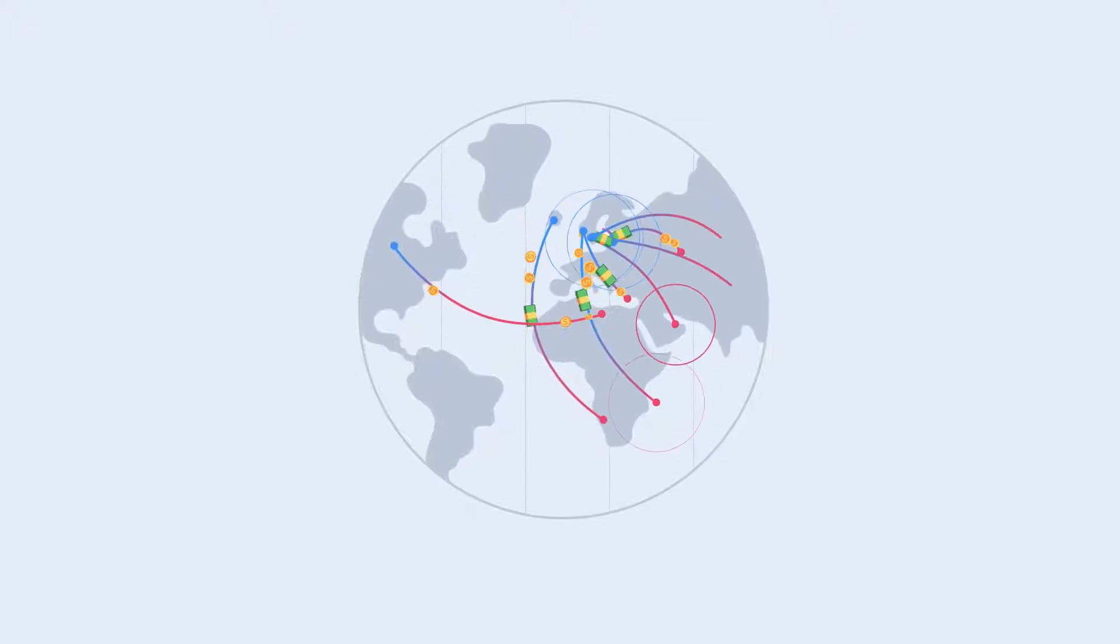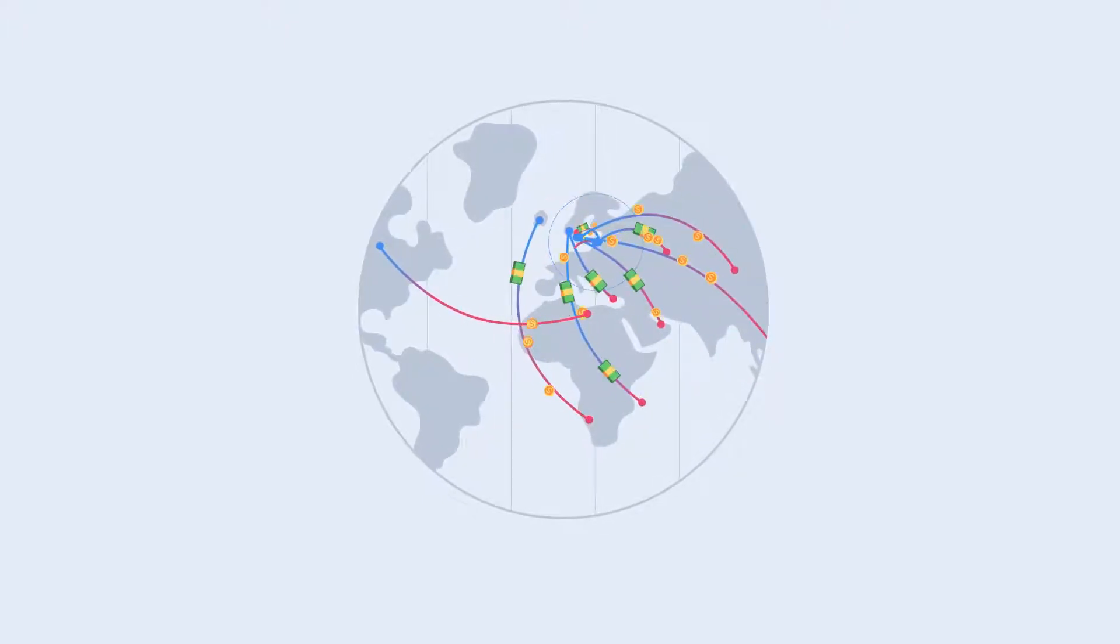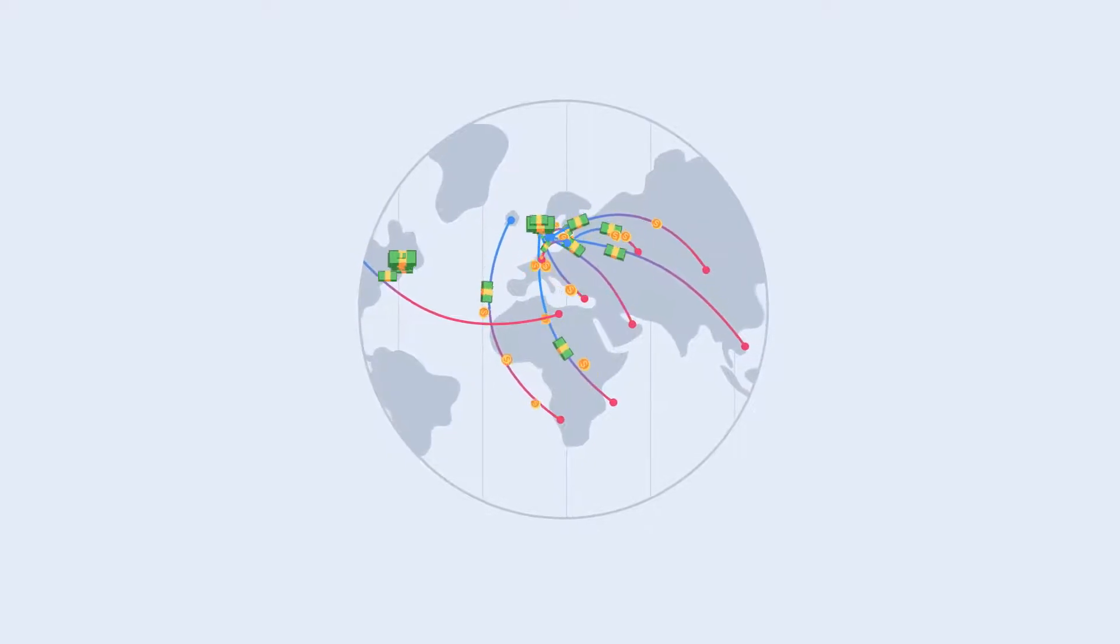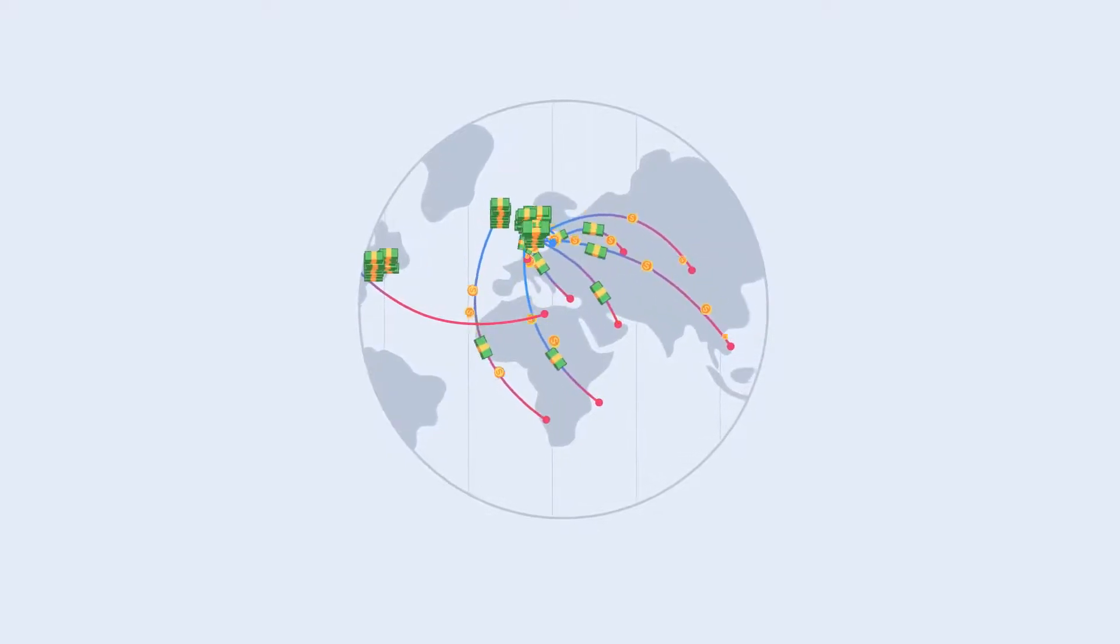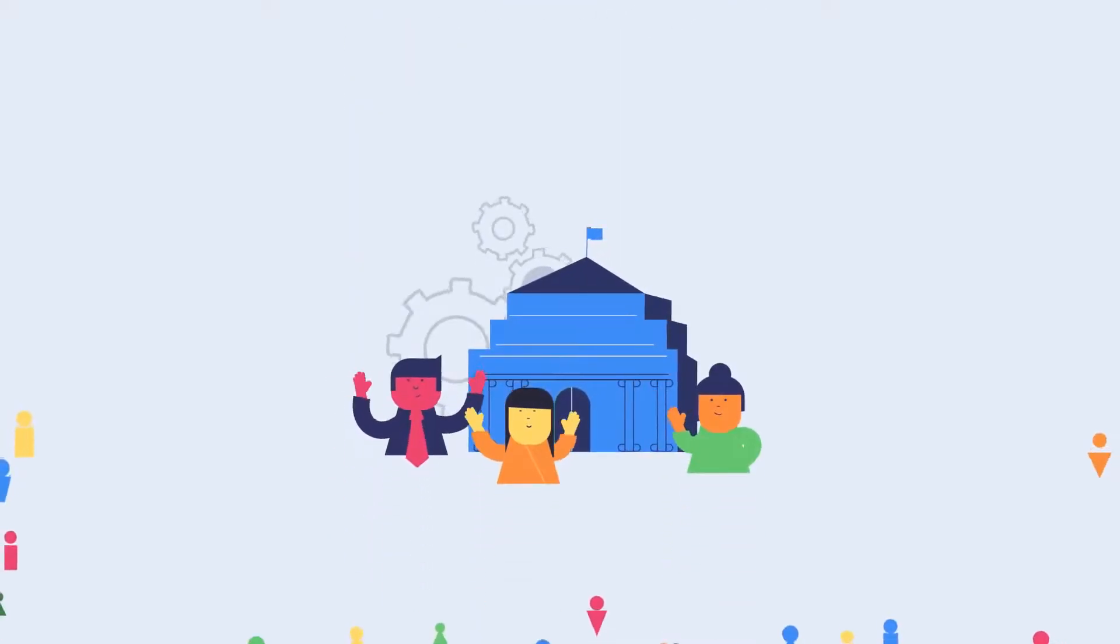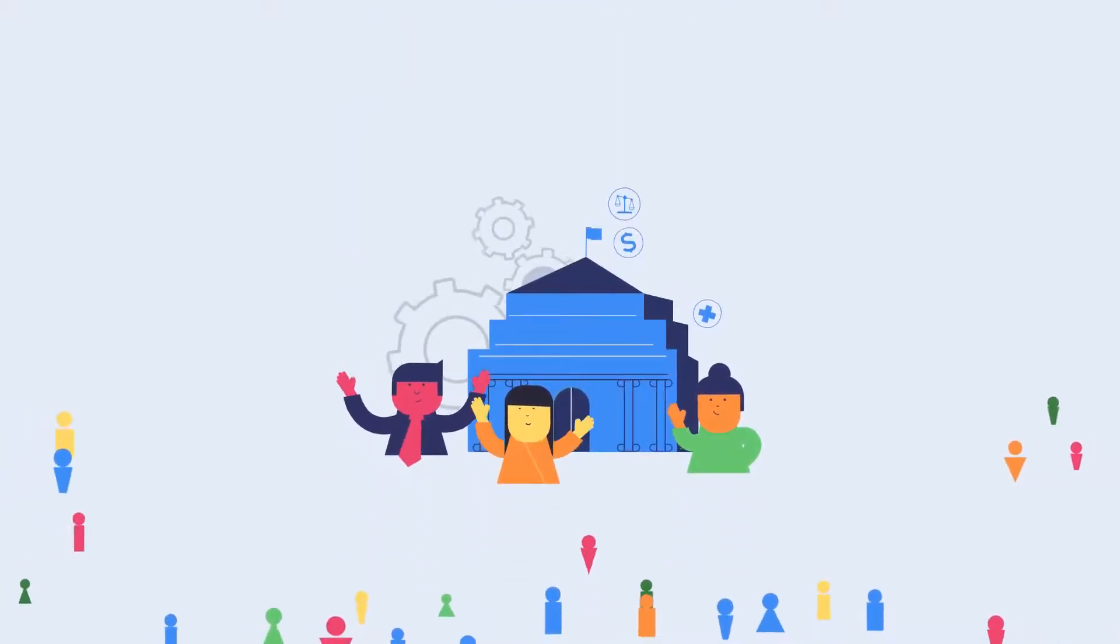But even countries with high CPI scores aren't free of corruption. Multiple scandals show that transnational corruption is often facilitated by countries at the top of the index, countries where the proceeds of corruption are stashed.